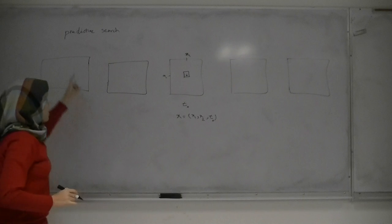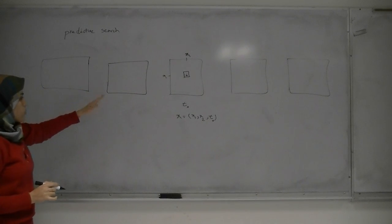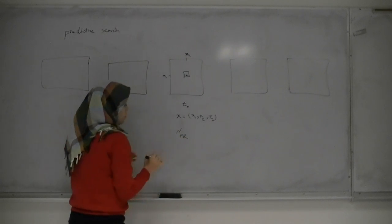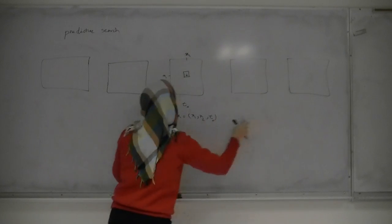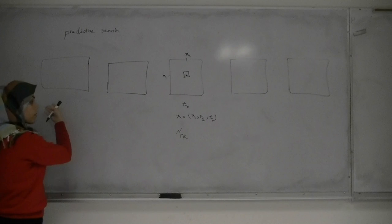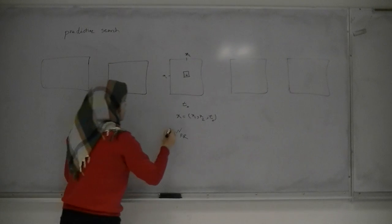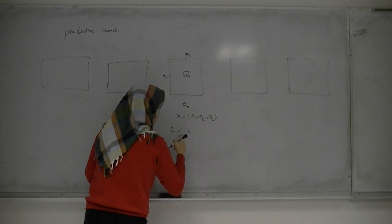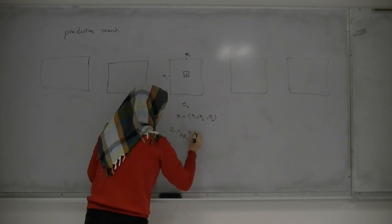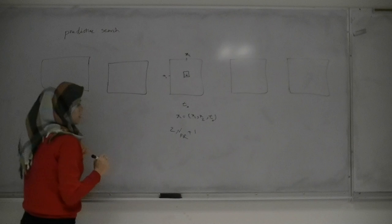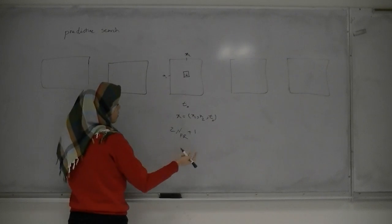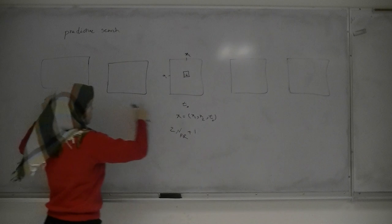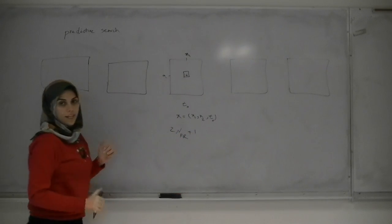For this predictive search, we define NFR as the number of frames on each side. We search in 2*NFR plus one frames total. For example, if NFR is equal to two, we are just searching these five frames.